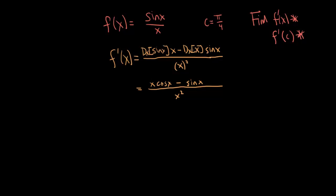Derivative of sine is cosine times x, so x cosine x. The derivative of x is one, so 1 times sine x. So that is f prime of x. The second part of the question was to find the derivative evaluated at c, where c is pi over 4. What that's doing is finding the slope of the tangent line when x equals pi over 4.